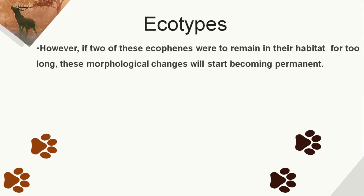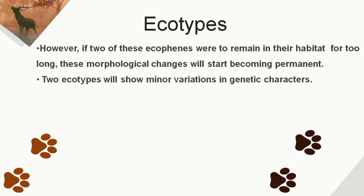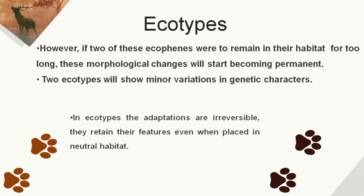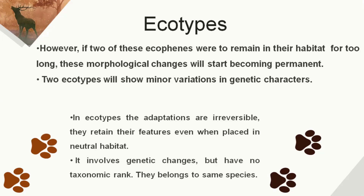Now, what are ecotypes? If two ecophenes remain in their respective habitats for a long time, these morphological changes will start to become permanent. For example, if that man lives in the warmer region for a longer time, the skin darkening becomes persistent due to certain genetic changes. In ecotypes, the adaptations are irreversible — they can retain their features even when placed in a neutral habitat. It involves genetic changes, but there is no specific taxonomic rank because they still belong to the same species, as they are not yet reproductively isolated.